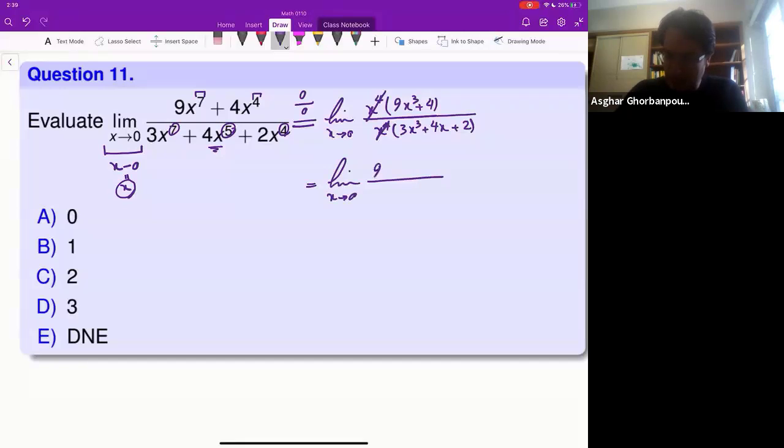This time the limit doesn't have the denominator... the denominator doesn't have zero limit. So we can use the quotient law and just use the limit of the numerator over the limit of the denominator.